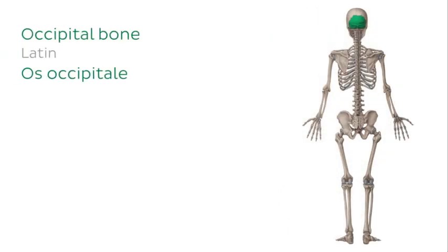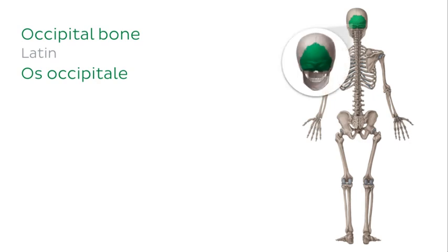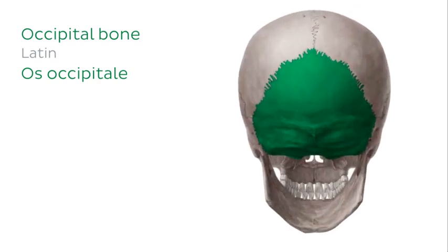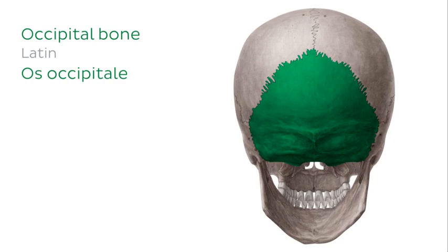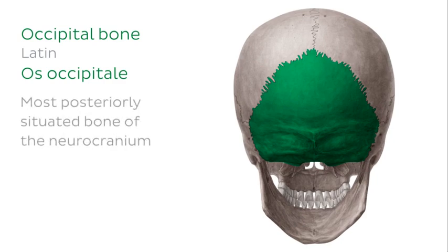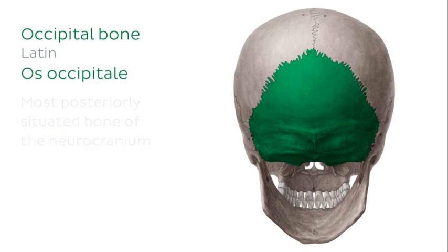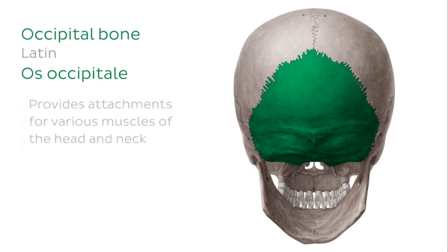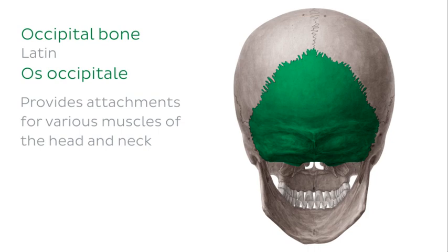Finally, we have the occipital bone, which is highlighted in green in our image on the right. The occipital bone is the most posteriorly situated bone of the neurocranium, and as well as protecting the brain, it also provides attachment for various muscles of the head and neck.